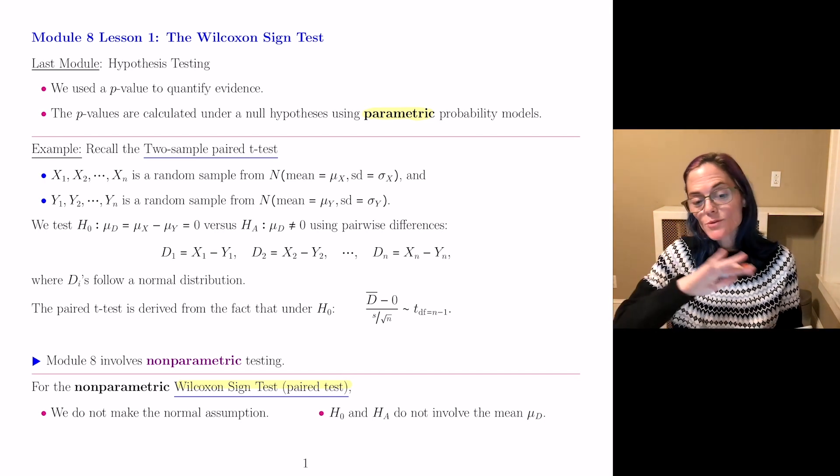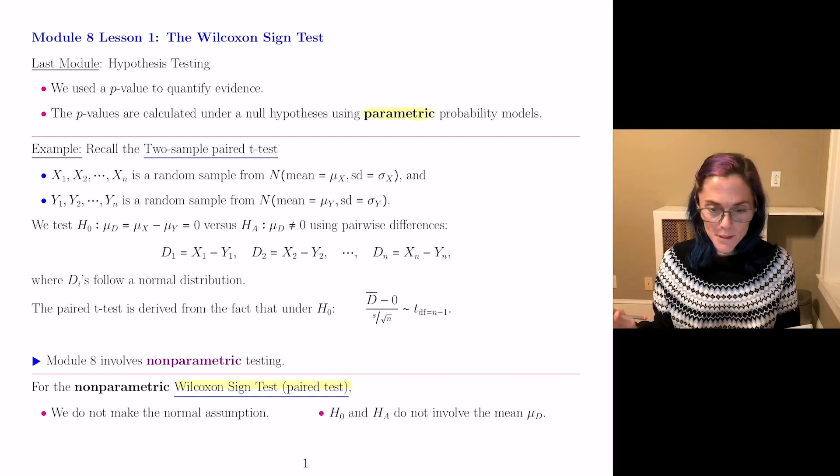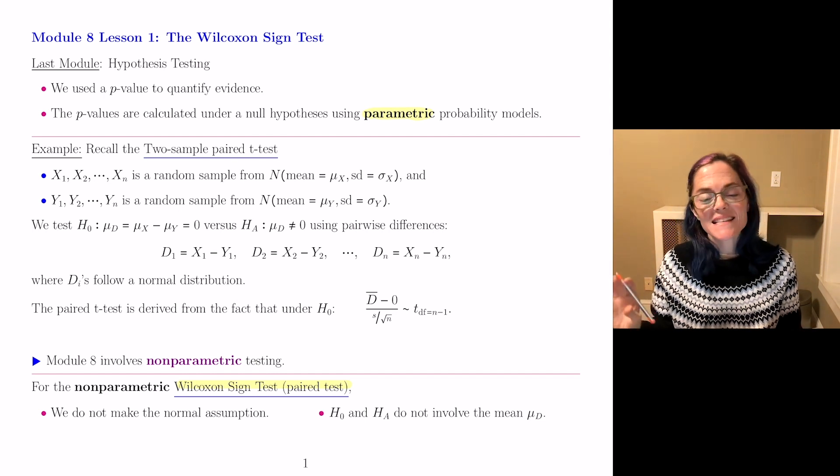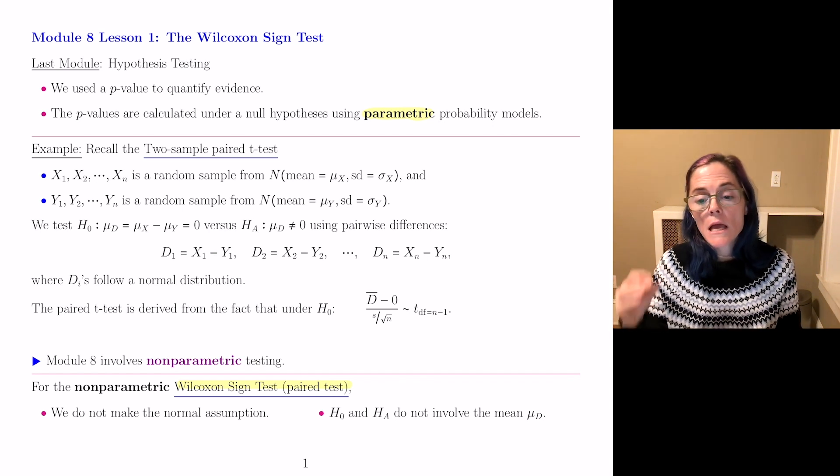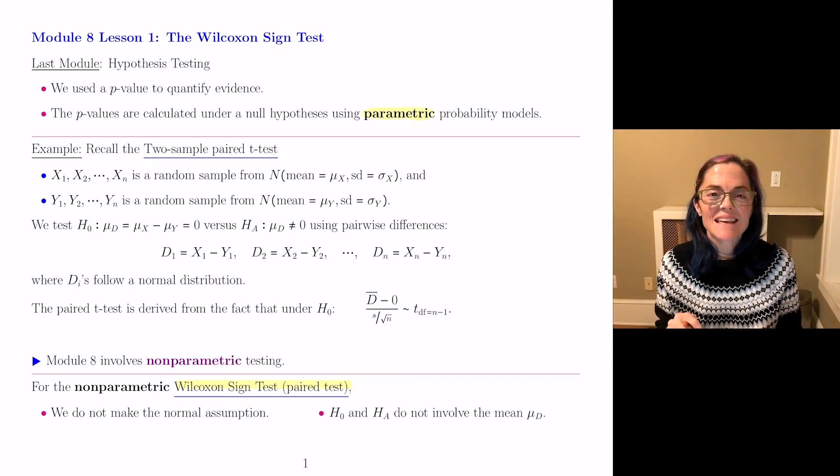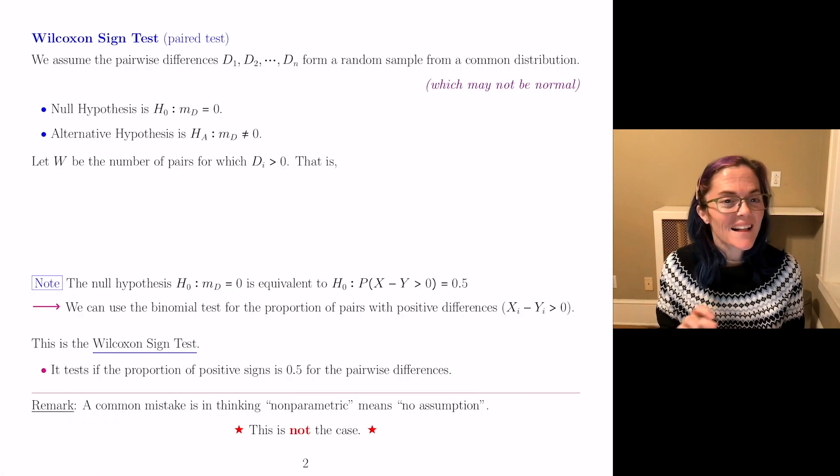In this test, we do not make the normality assumption. Because of this, H₀ and Hₐ, the null and alternative hypothesis, do not involve the mean μd. Well, in this test,